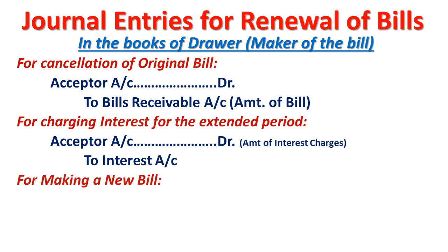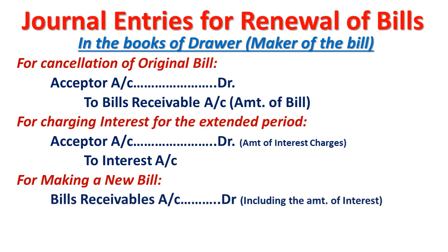The next entry is for drafting a new bill. When drafting a new bill, the entry will be: Bills Receivable Account debit — including the amount of interest — to Acceptor Account. So in this way we need to pass the general entries. Bear in mind the cancellation entry and dishonor entry remain the same always — in the books of the drawer, the drawee account, that is acceptor account, will be debited.